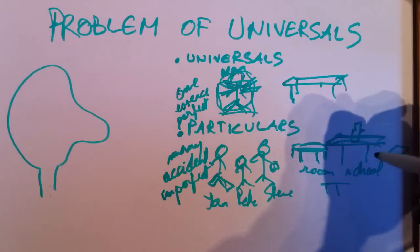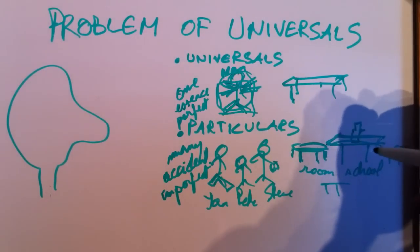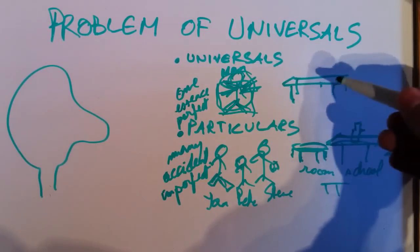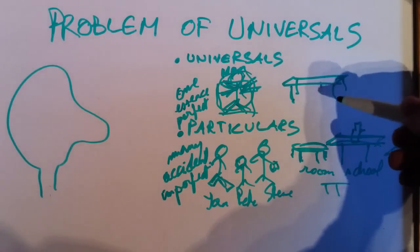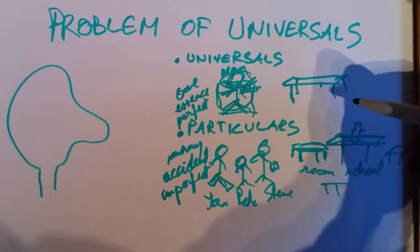But these are all imperfect elements of the table, accidental characteristics of the table, which are not a part of, let's say, the universal idea of what the table is.